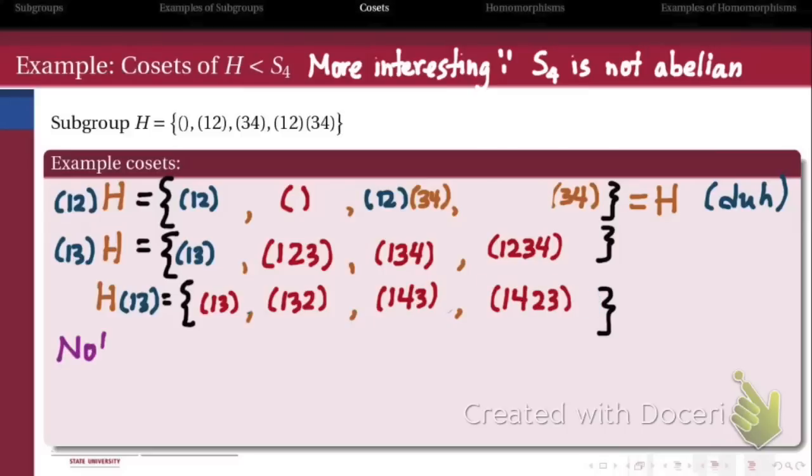the left coset generated by (1,3), and the right coset generated by (1,3) on the subgroup H are not the same as one another. They consist of the same number of elements, but the elements themselves are actually different.